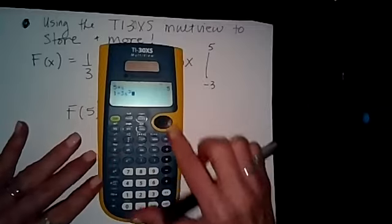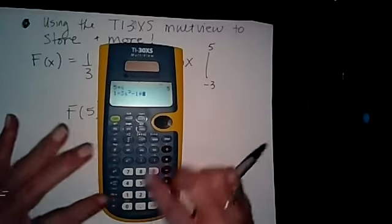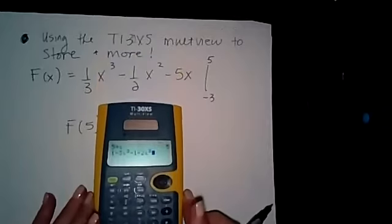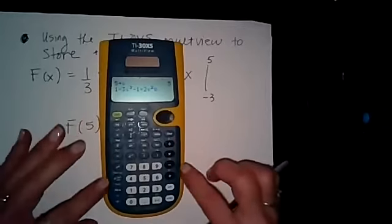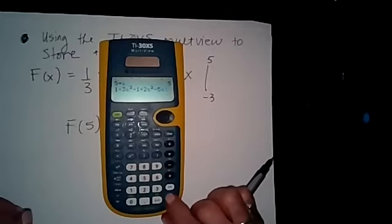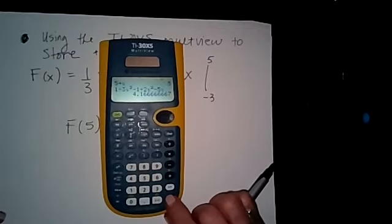Okay, and I have to come down minus 1 divided by 2 X squared minus 5X. And if I push enter, it gives me 4.166666.